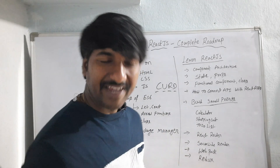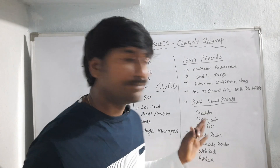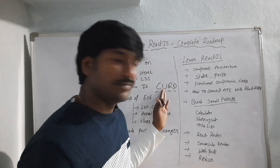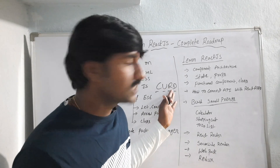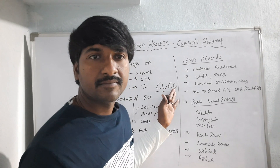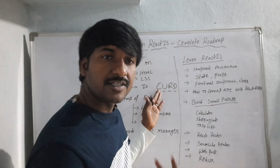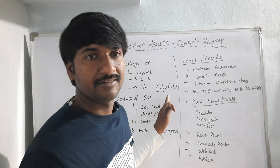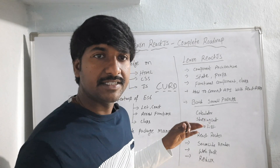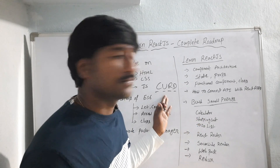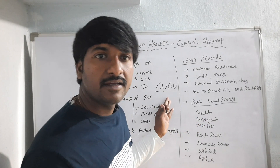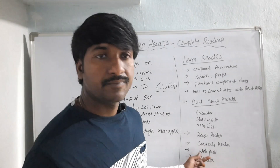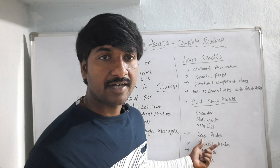Once you understand React Router, you can make a project like a simple CRUD application. CRUD means Create, Update, Read, and Delete. The entire software project depends on this formula — how to create data, update data, read data, and delete data. Any application will depend on this formula.